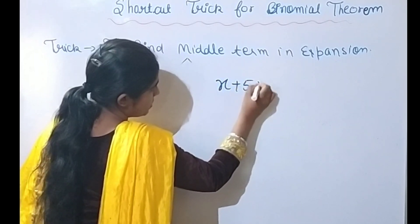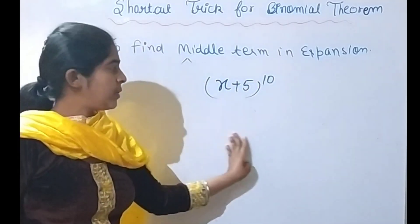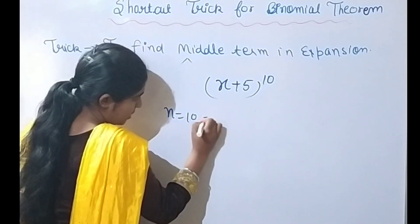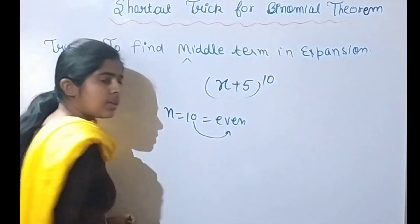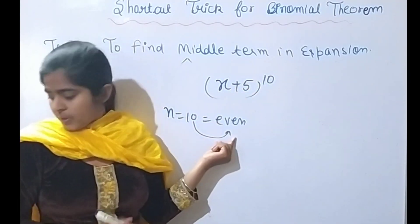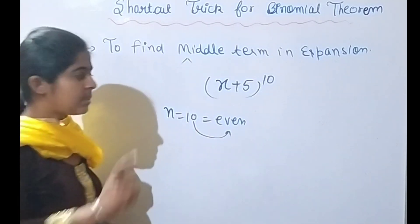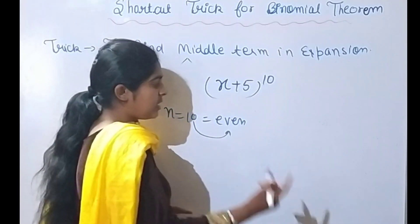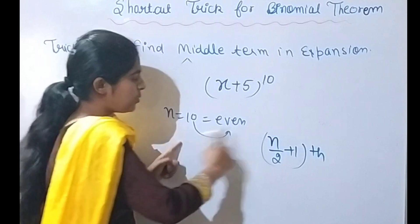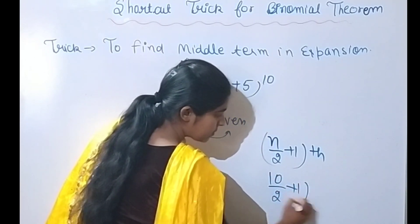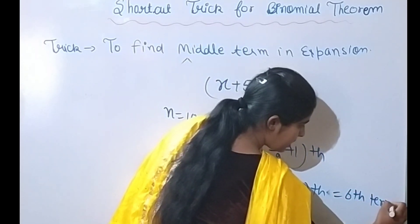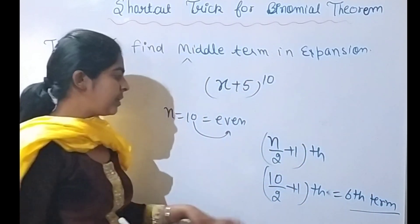For example, if we have (x + 5) raised to the power 10, I need to find the middle term. First I check: n is 10, and 10 is even. Since n is even, the middle term is T(n/2 + 1). So I put n = 10: the middle term is T(10/2 + 1) = T(5 + 1) = T6. So the sixth term is the middle term.